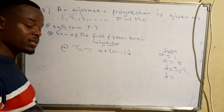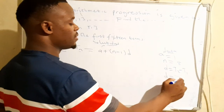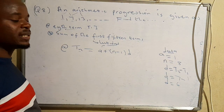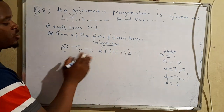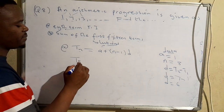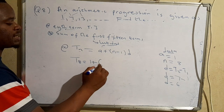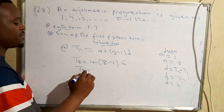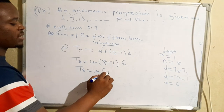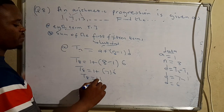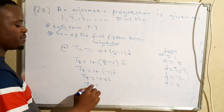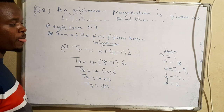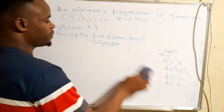The common difference is 6. Plugging into the formula: T8 = 1 + (8−1) × 6 = 1 + 7 × 6 = 1 + 42 = 43. So the term in the eighth position is 43. Let's move on to part b: find the sum of the first 15 terms.